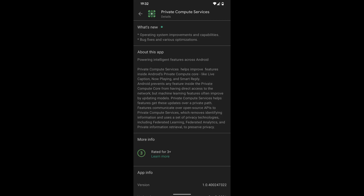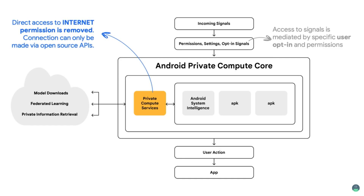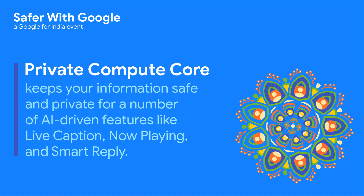This can include functions like voice recognition and language translation. Private Compute Core is a secure environment that is isolated from the rest of the operating system and apps, where closed-source features can safely access ambient and OS data. With Android Private Compute Services, your data stays on your device, ensuring that your sensitive information remains private and secure.